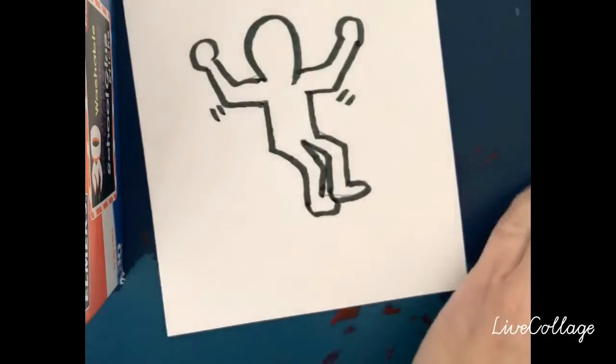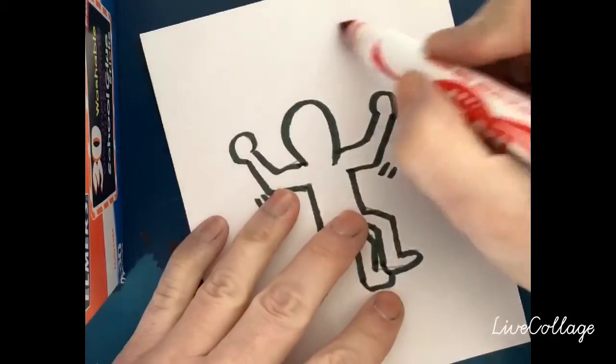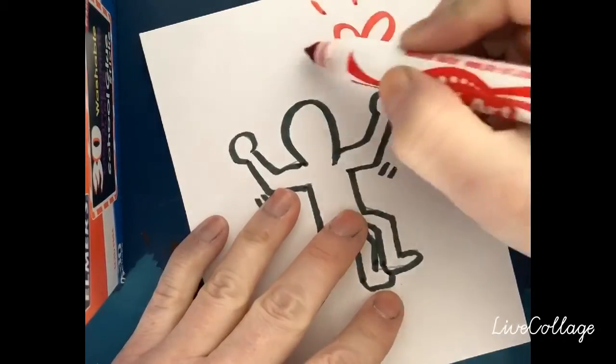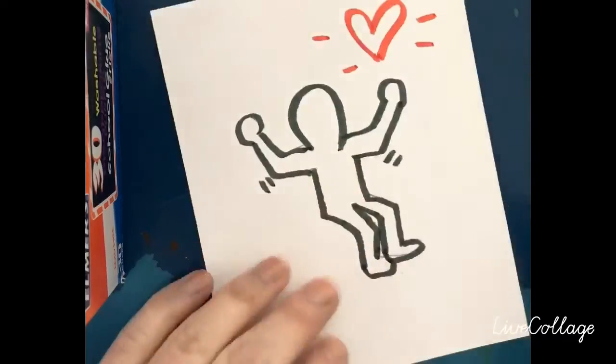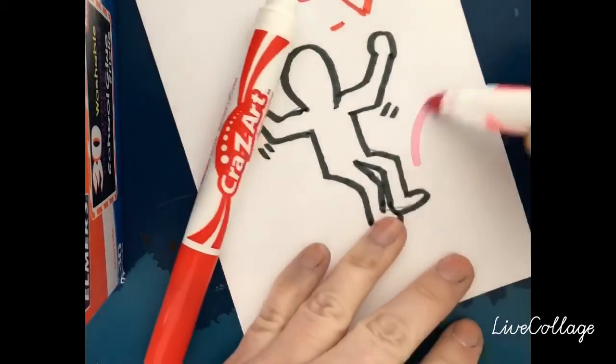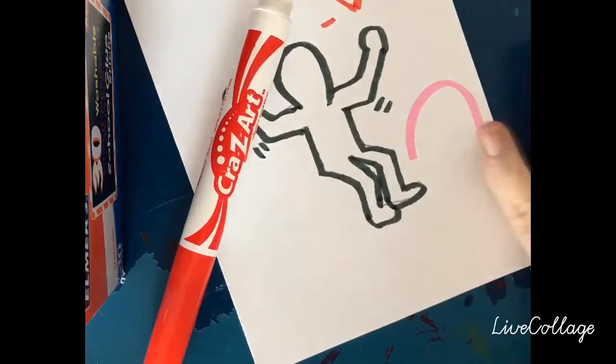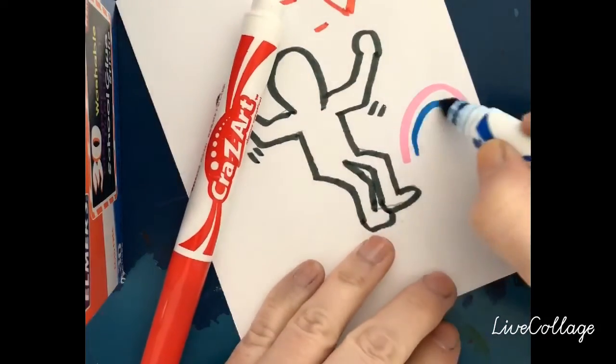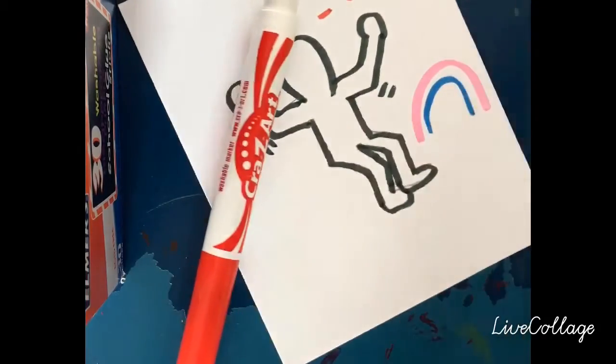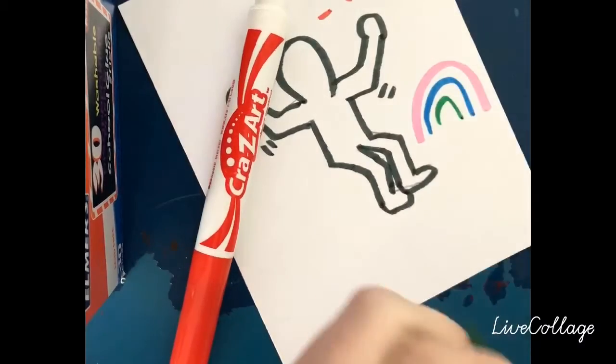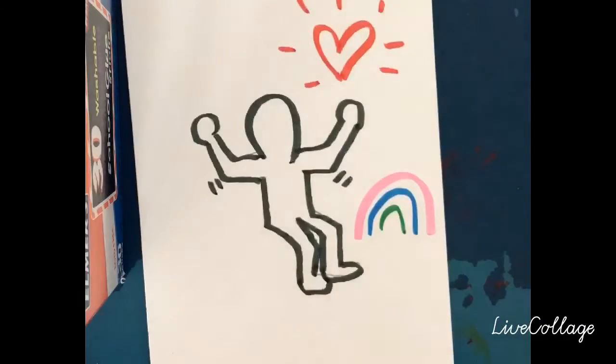And we'll just add something fun like a heart with some lines around it or you can add a rainbow. Again, simple lines and movement. And there you have a very simple Keith Herring figure drawing.